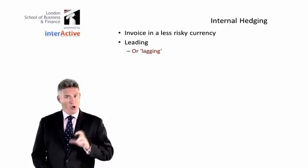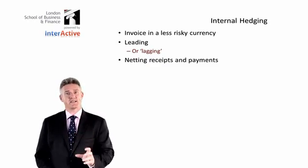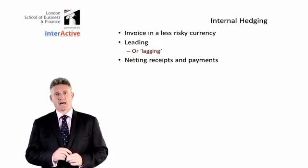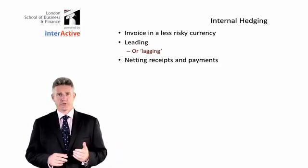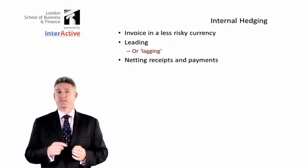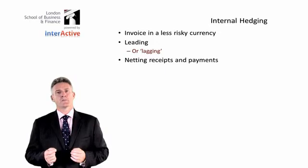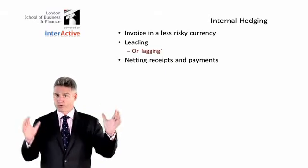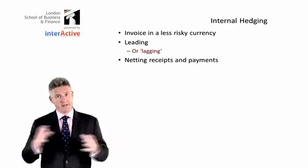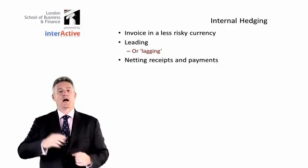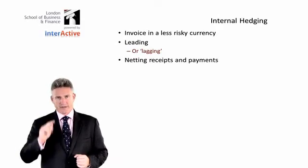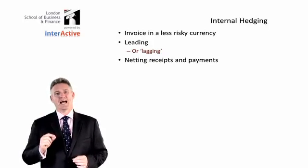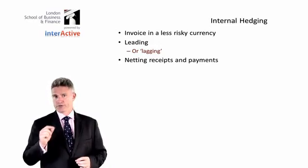We might consider lagging in a more complicated environment where we're netting off receipts and payments. Netting receipts and payments is quite simple. If I have an expected receipt of €3 million from one customer and a payment around the same time of €2 million to one of my suppliers, rather than having two separate transactions — one worth three, one worth two, a total of €5 million — I'll net them off. Three net off against two gives me €1 million of transaction. That reduces transaction costs and also reduces the extent of the exposure to exchange rate risk.